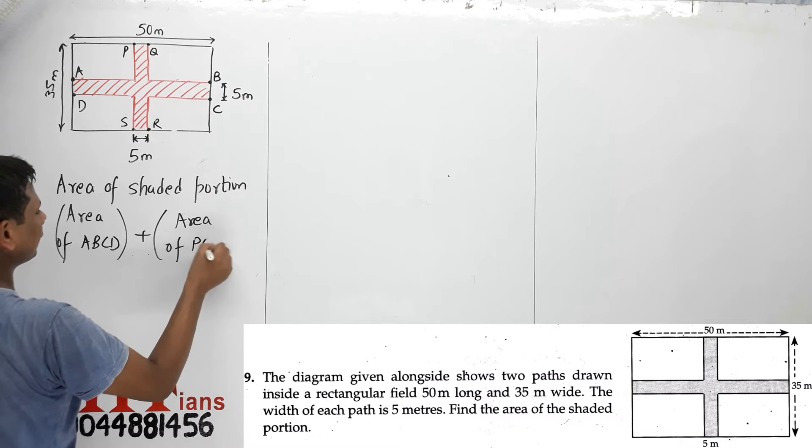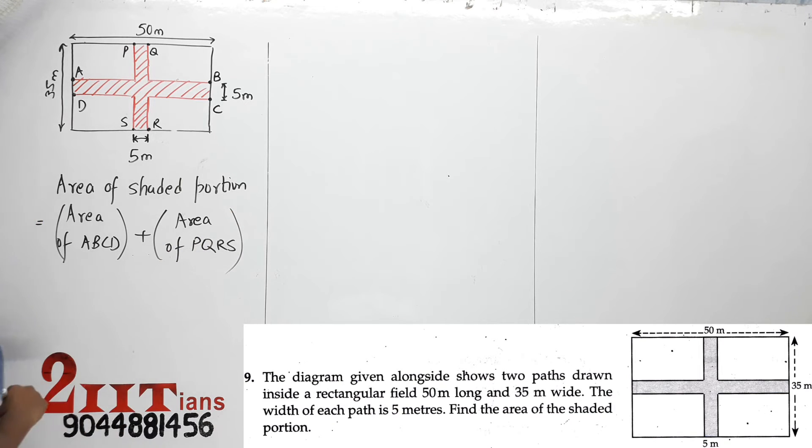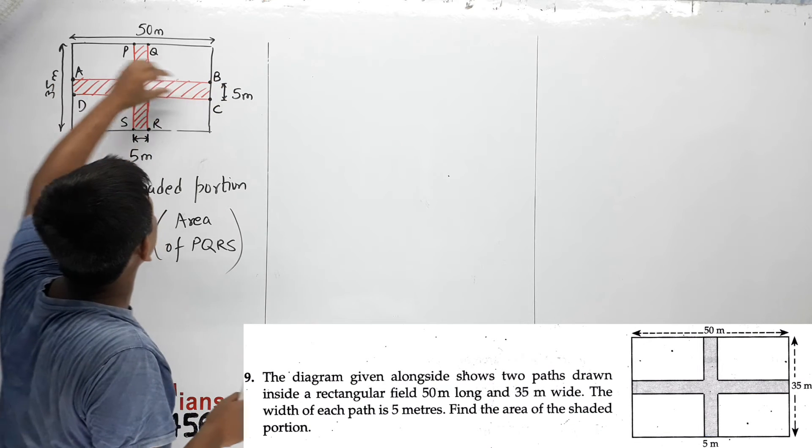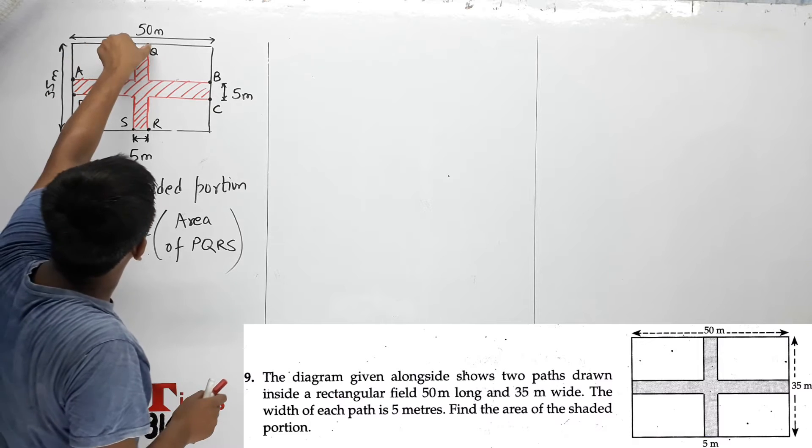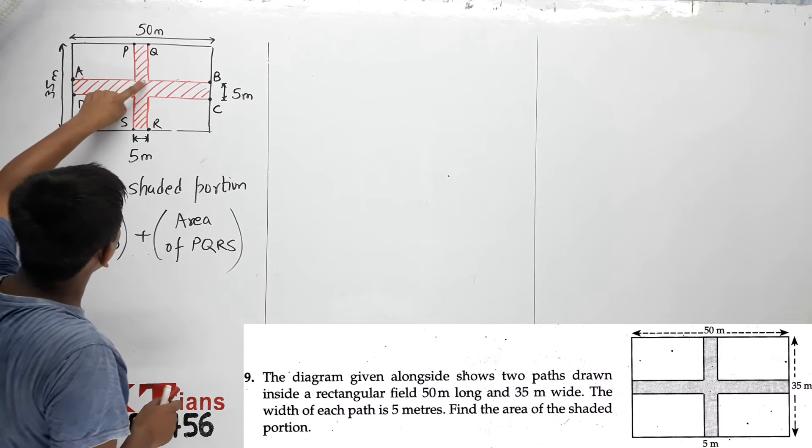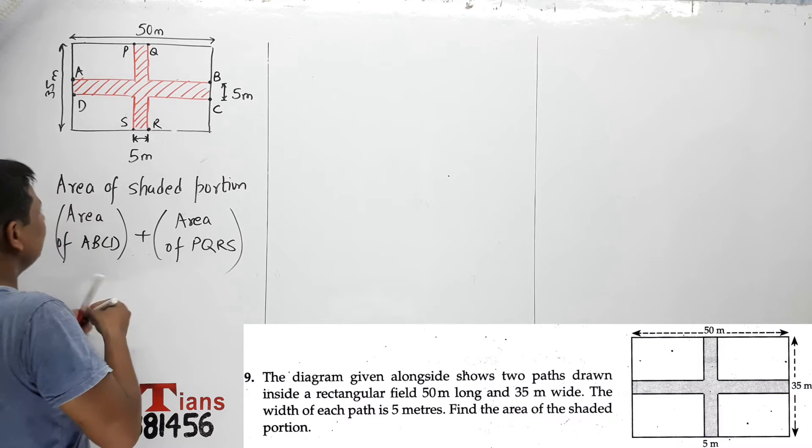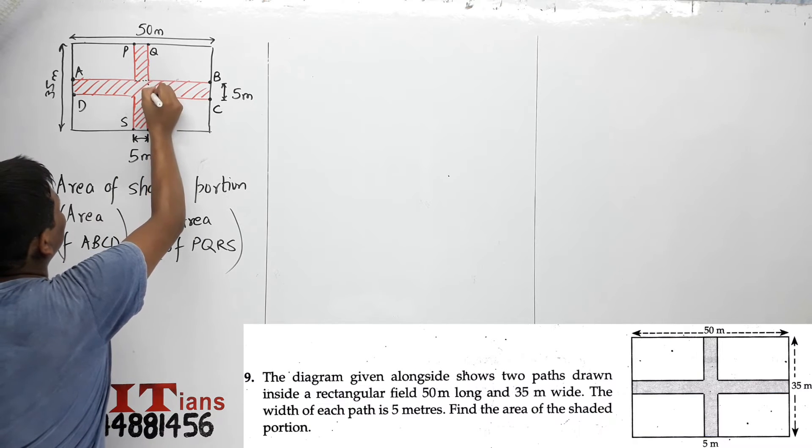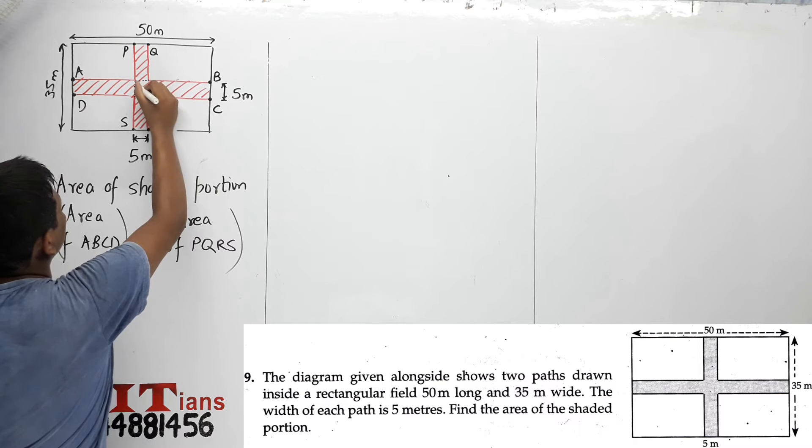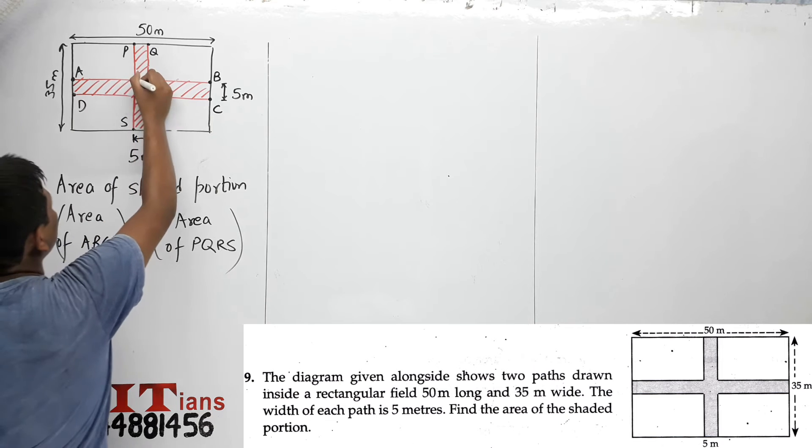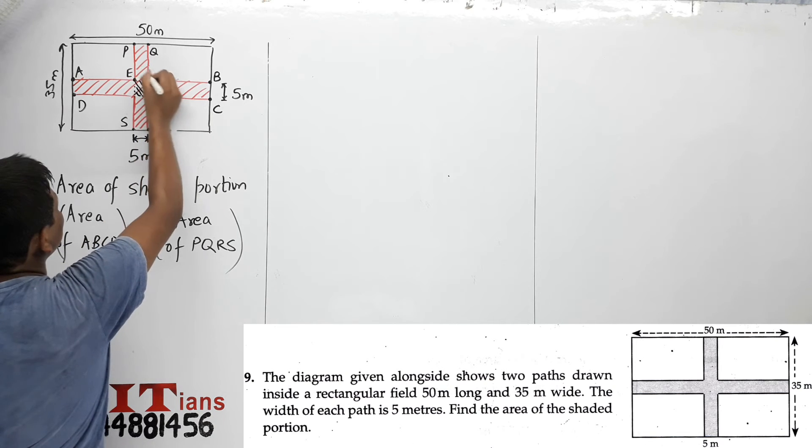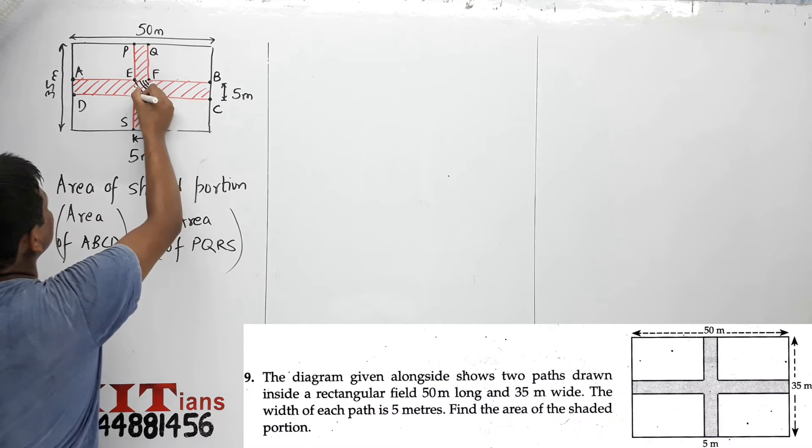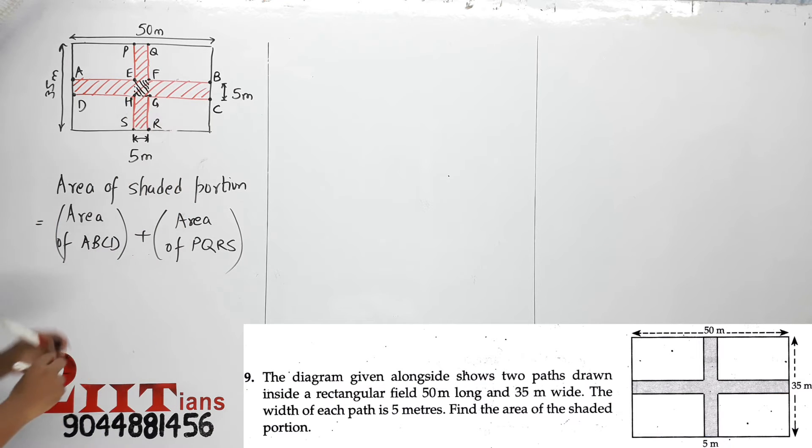Anyone would do this, but there's a slight problem here. What will happen when you take the area of ABCD and then take the area of PQRS? The situation is that the black portion inside will be covered twice. We'll label this EFGH. This will be covered twice, so we'll subtract it once.